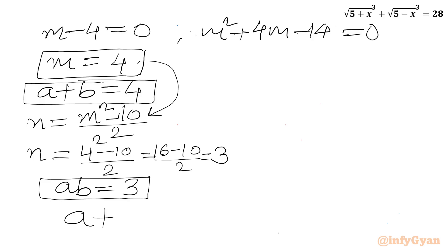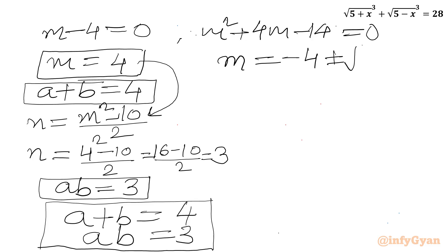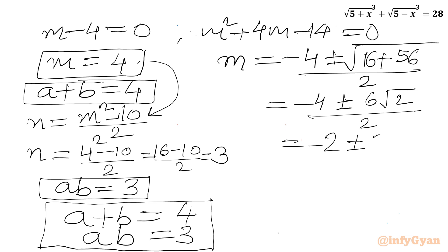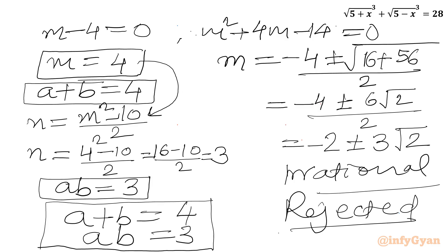Since we need integer solutions, we reject the irrational roots. We use m equal to 4, so n equals m squared minus 10 over 2 equals 16 minus 10 over 2 equals 3. Therefore a plus b equals 4 and ab equals 3.